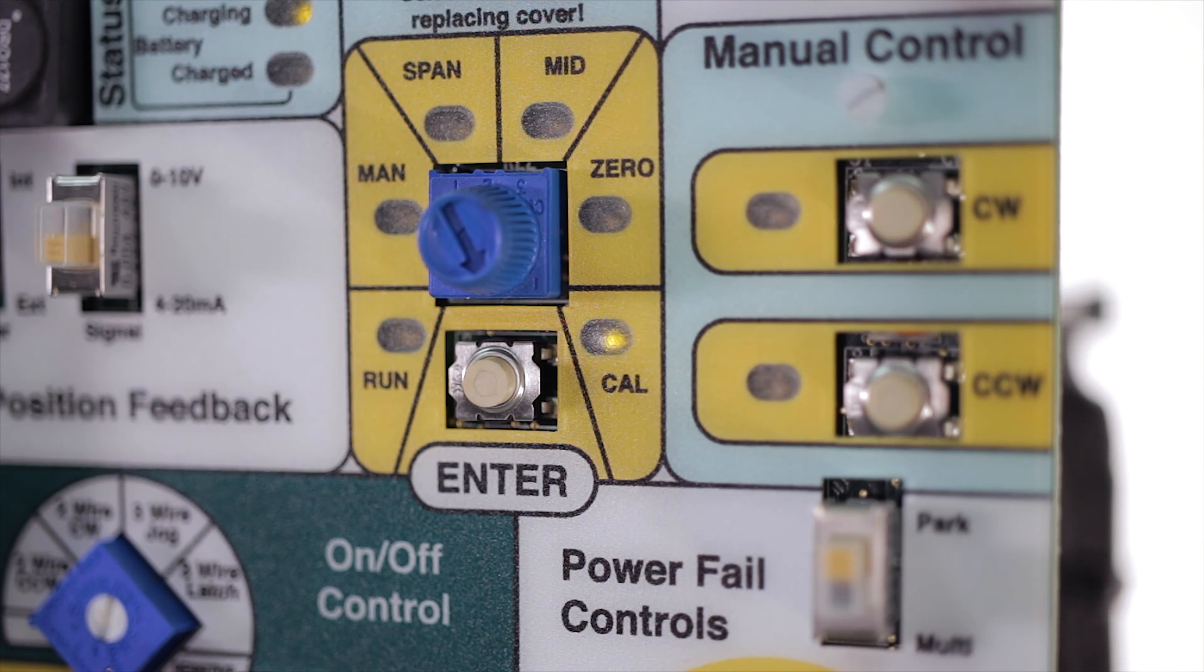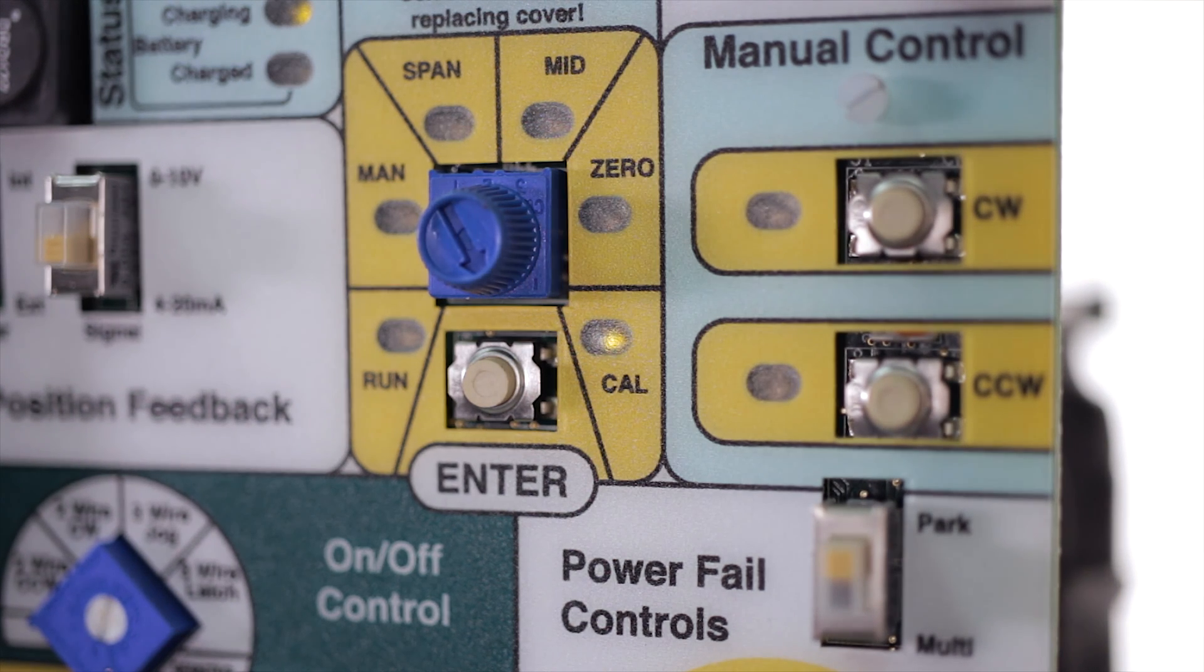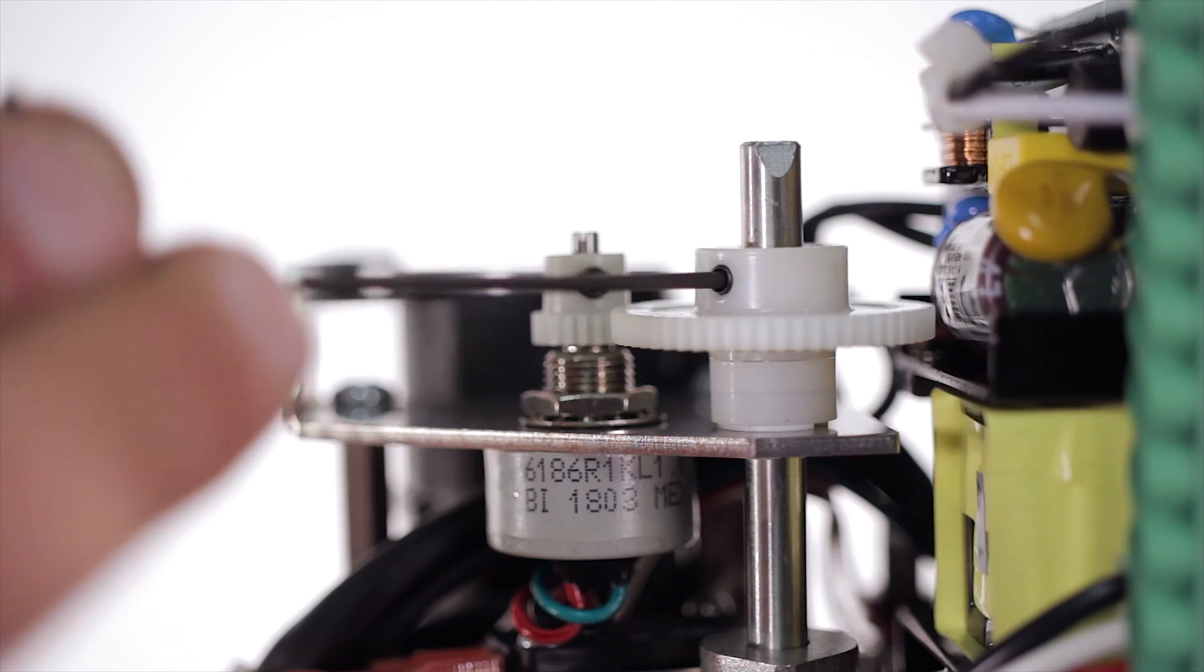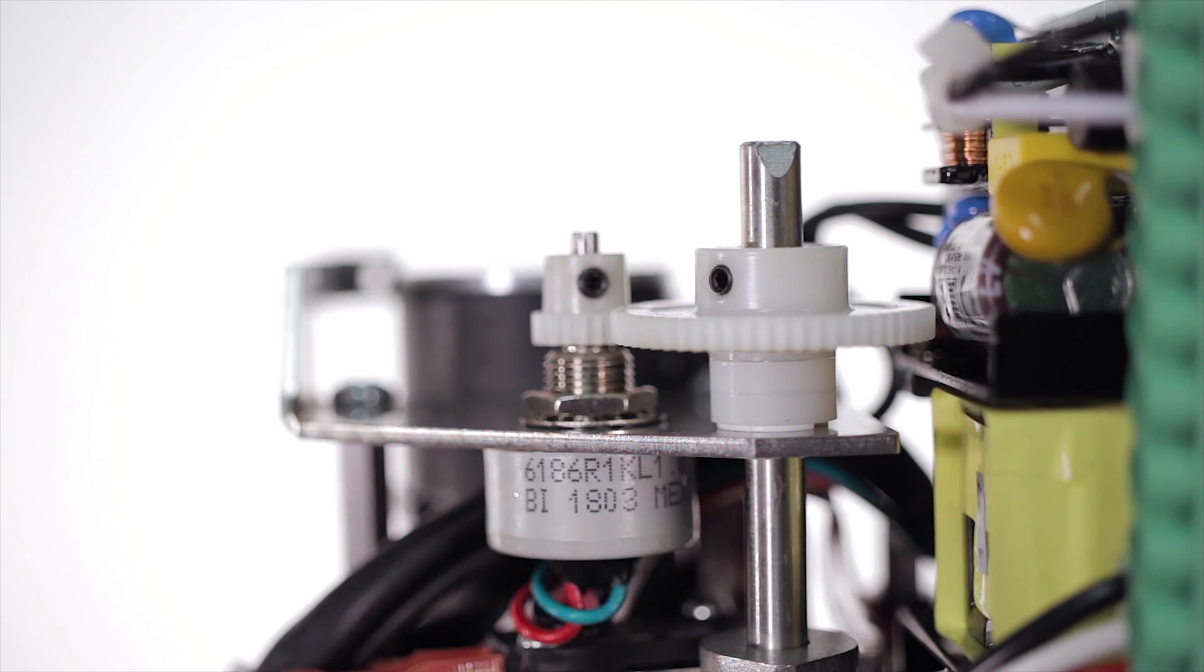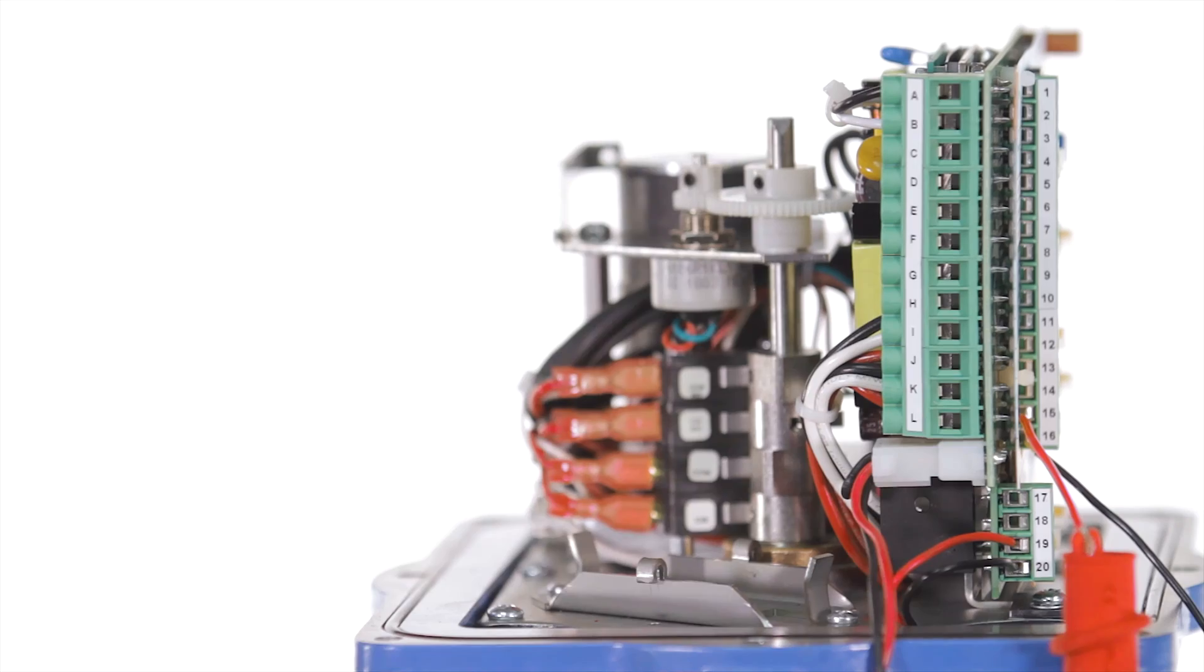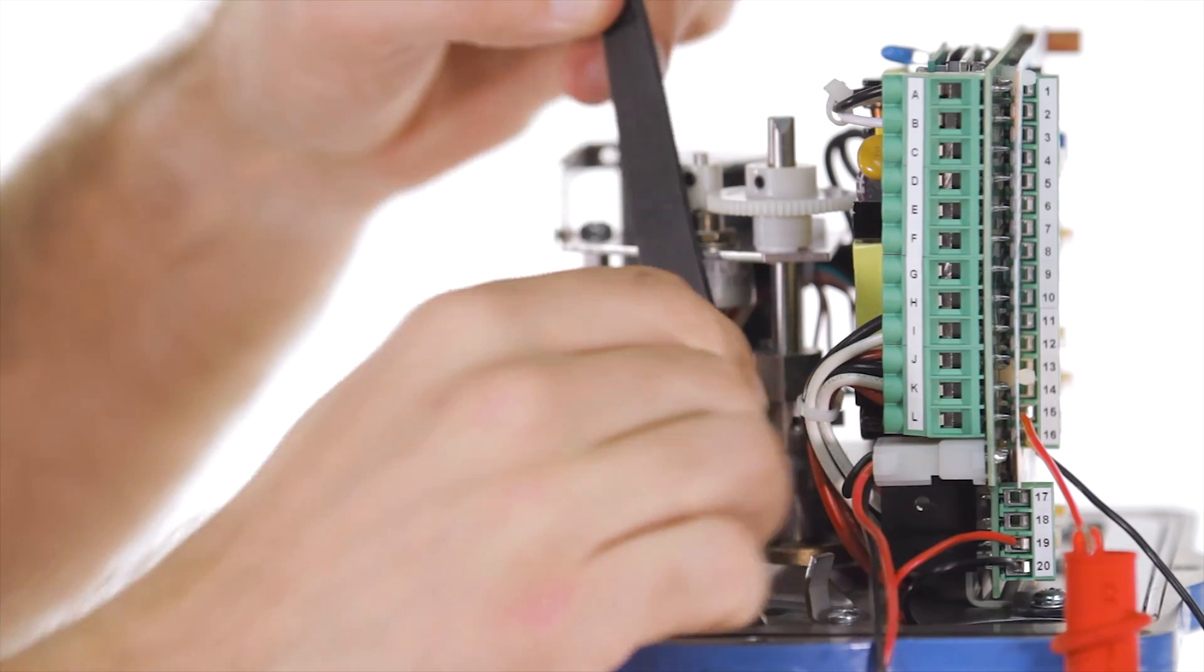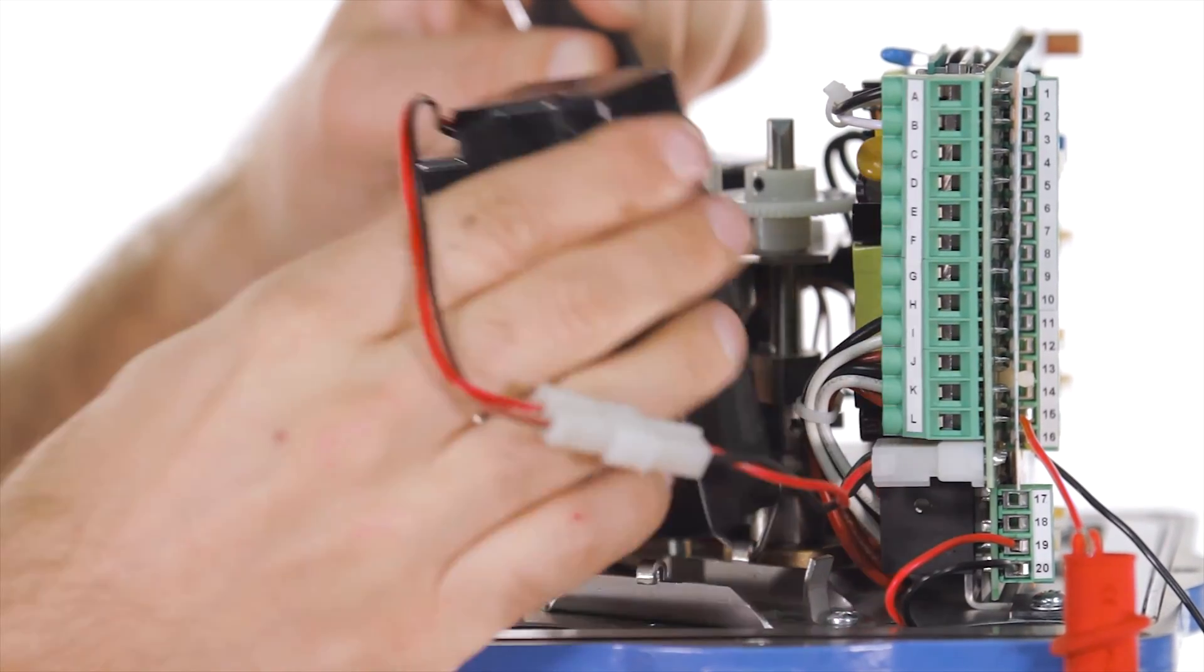The LED light will blink faster and faster as you get closer to calibration point. When the calibration LED is solid retighten set screw on the main gear then push the enter button. Now that your potentiometer is calibrated you can replace your battery.